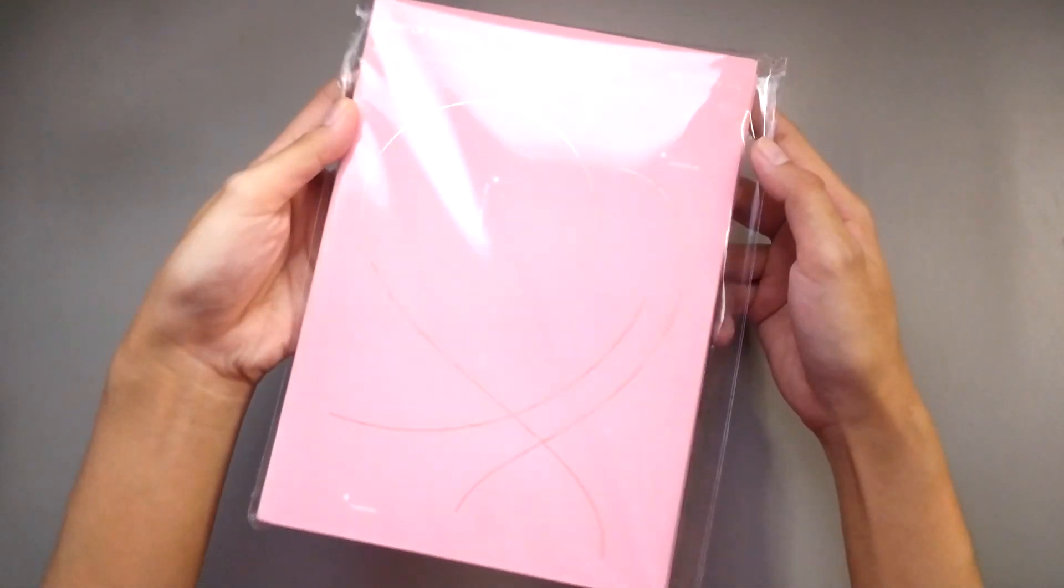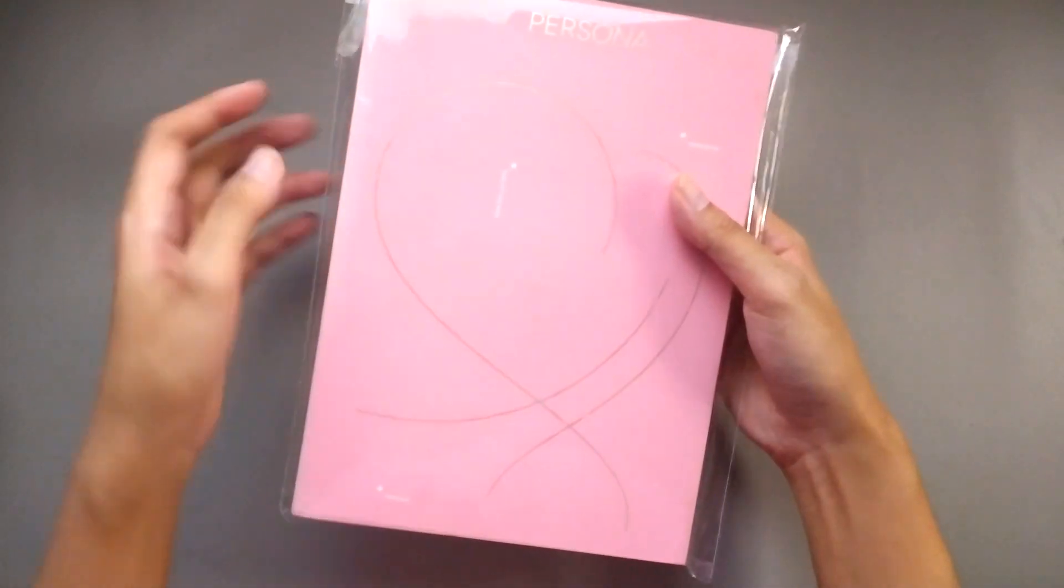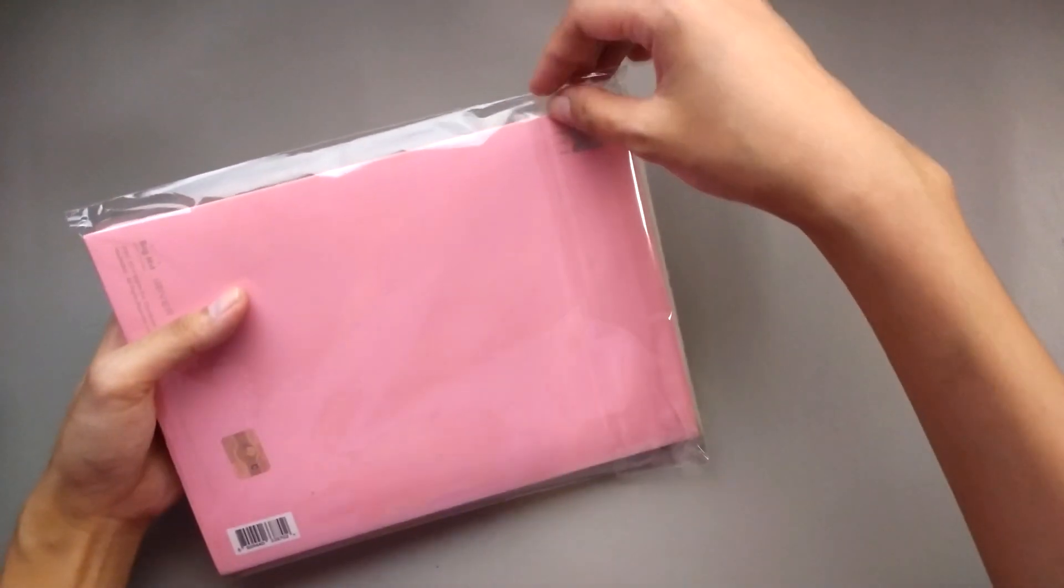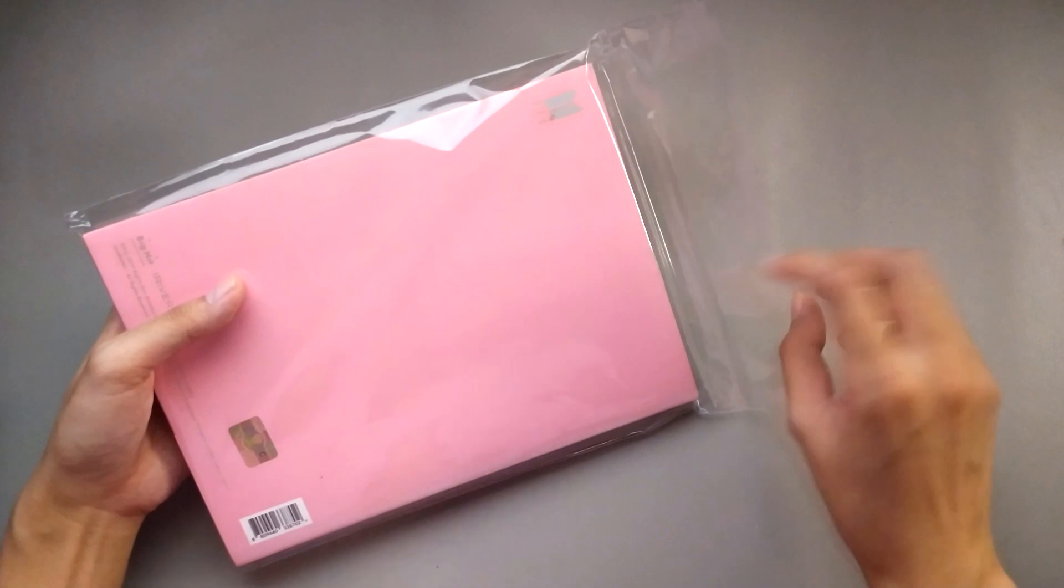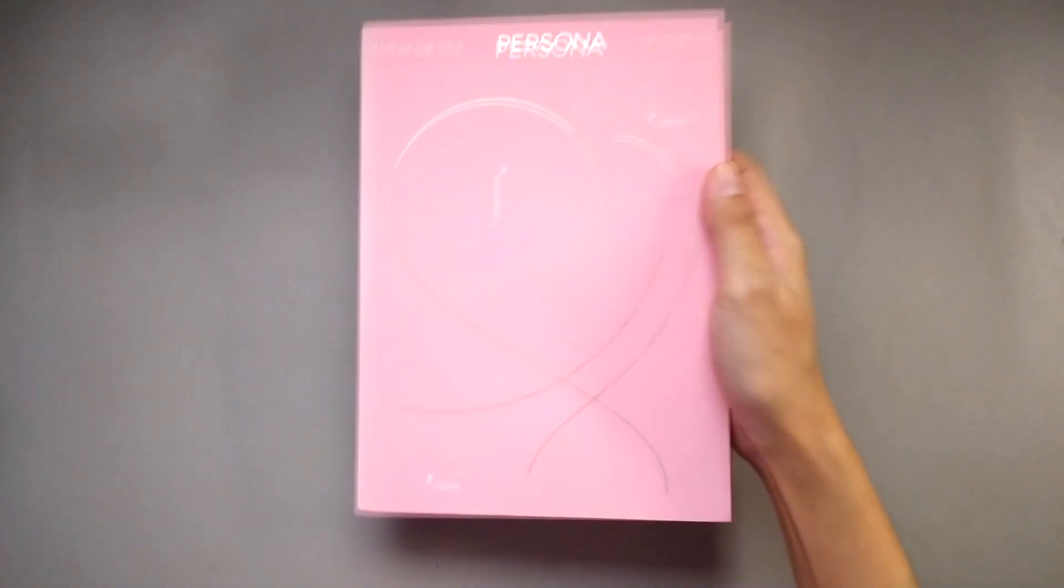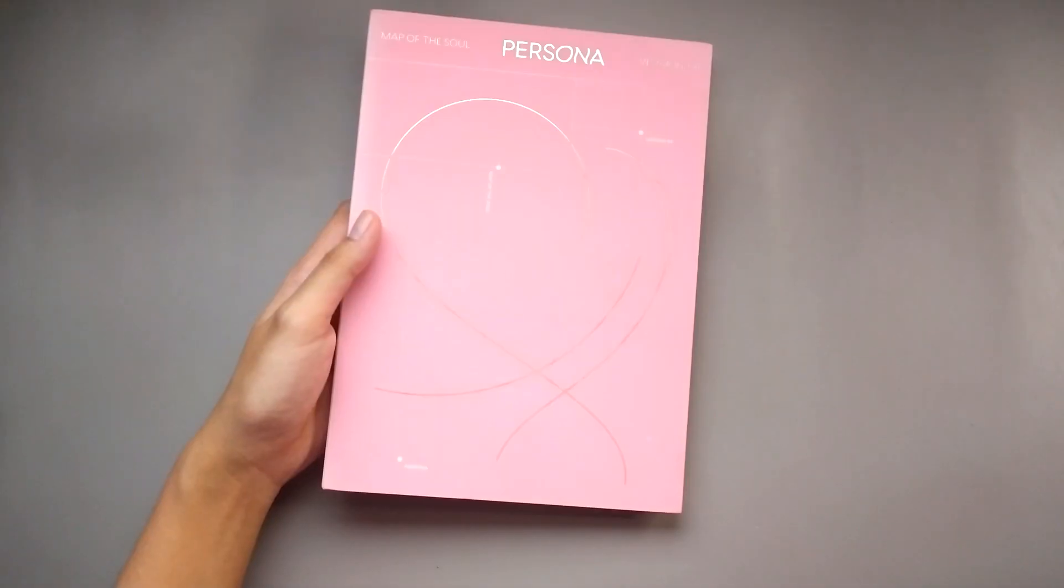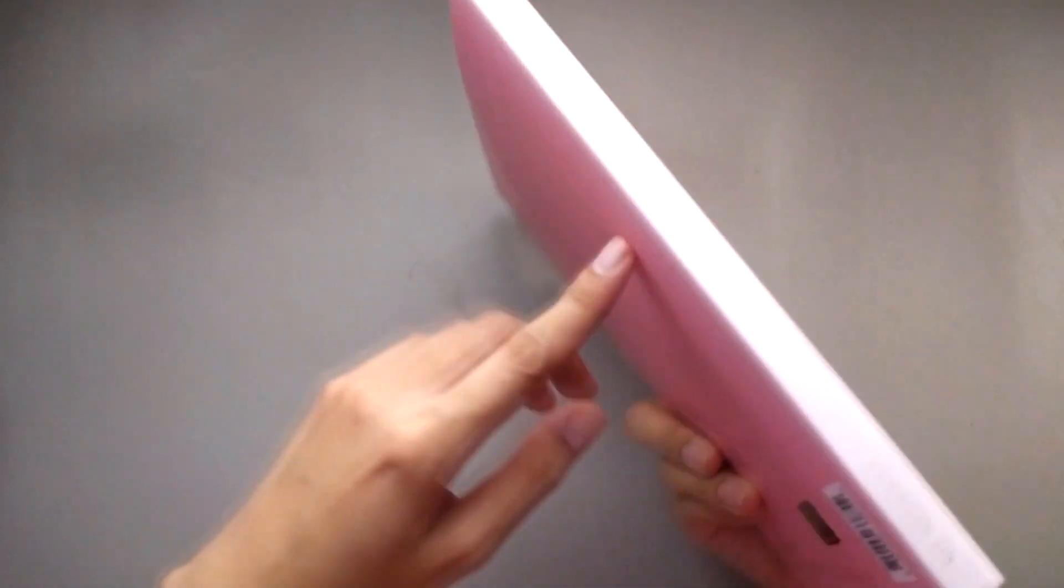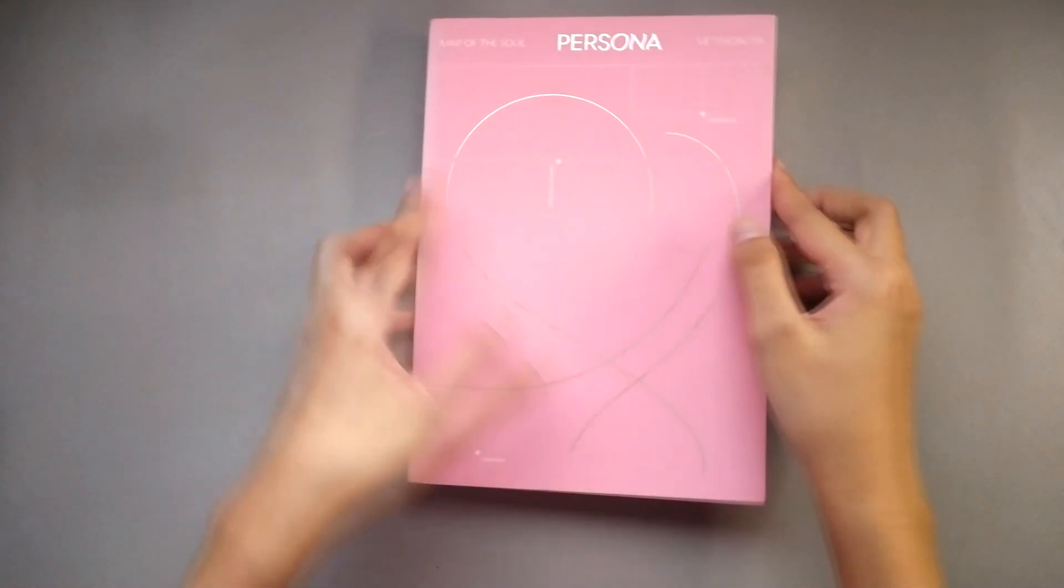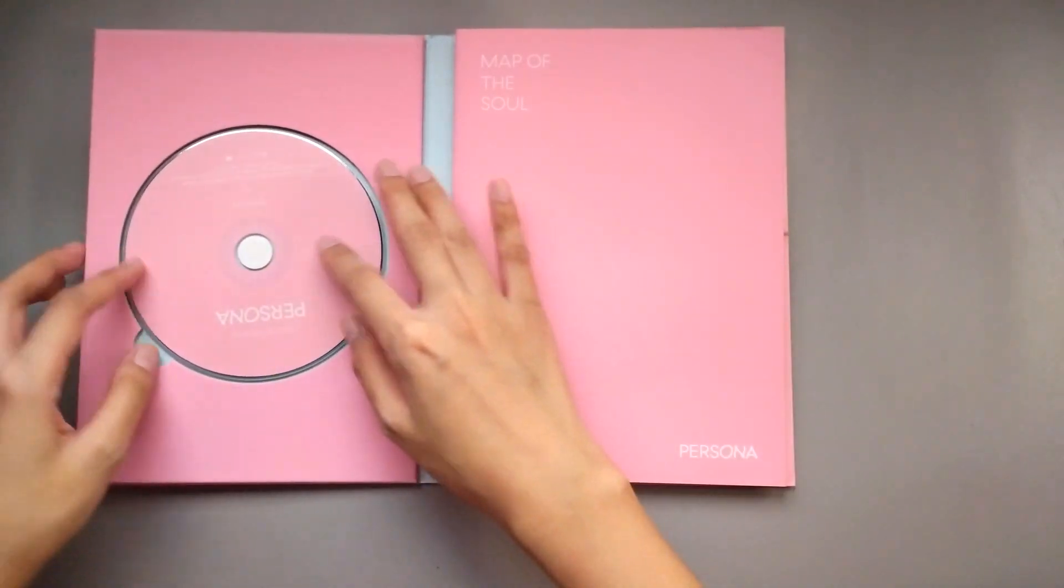This is going to be a quick one because this album is actually unsealed. I got this from my trusted group order manager. She was selling some of her old on-hand stocks. As you can see, it's already faded on the spine. I didn't really ask her which inclusions I would still get inside. So let's find out. I'm pretty sure the photocard isn't in here.